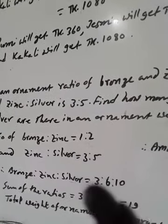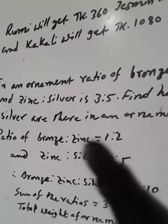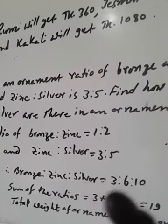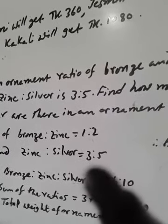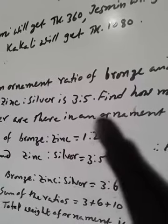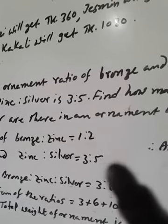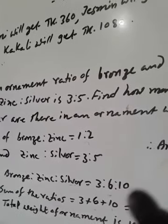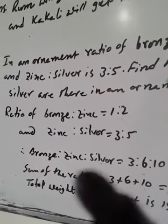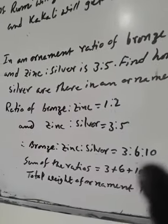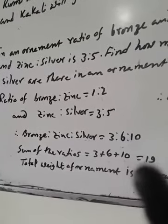We have to make it continuous proportion. So bronze is to zinc is to silver equal to, we have to multiply, 1 multiplied 3 is 3, and 2 cross multiplied, 2 multiplied 3 is 6, then 2 multiplied 5 is 10. So bronze is to zinc is to silver will be 3 is to 6 is to 10, and sum of the ratios is 3 plus 6 plus 10 equals 19.